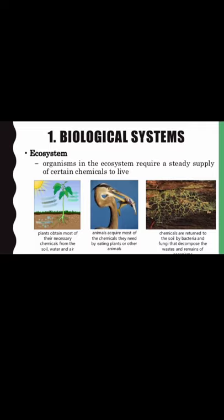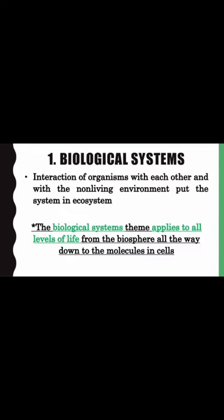Biological systems — ecosystem: organisms in an ecosystem require a steady supply of certain chemicals to live. Plants obtain most of their necessary chemicals from the soil, water, and air. Animals acquire most of the chemicals they need by eating plants or other animals. Chemicals are returned to the soil by bacteria and fungi that decompose the wastes and remains. The interaction of organisms with each other and with the non-living environment puts the system in ecosystem. The biological systems theme applies to all levels of life, from the biosphere all the way down to the molecules in cells.